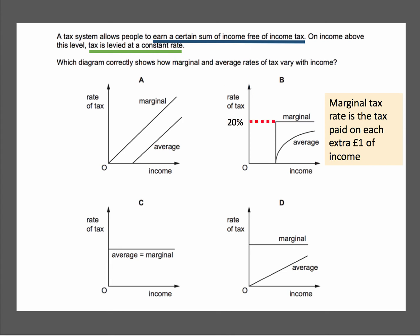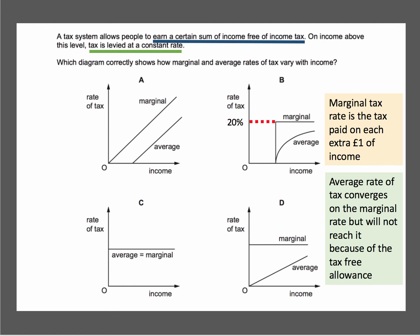The marginal rate will stay exactly the same, but look at what's happening to the average. The average rate starts at zero once you begin to pay tax, and then starts to climb, getting closer to the marginal rate but not quite touching it. The average rate of tax is tax paid divided by gross income, and it converges on the marginal tax rate but won't breach it because of the tax-free allowance.